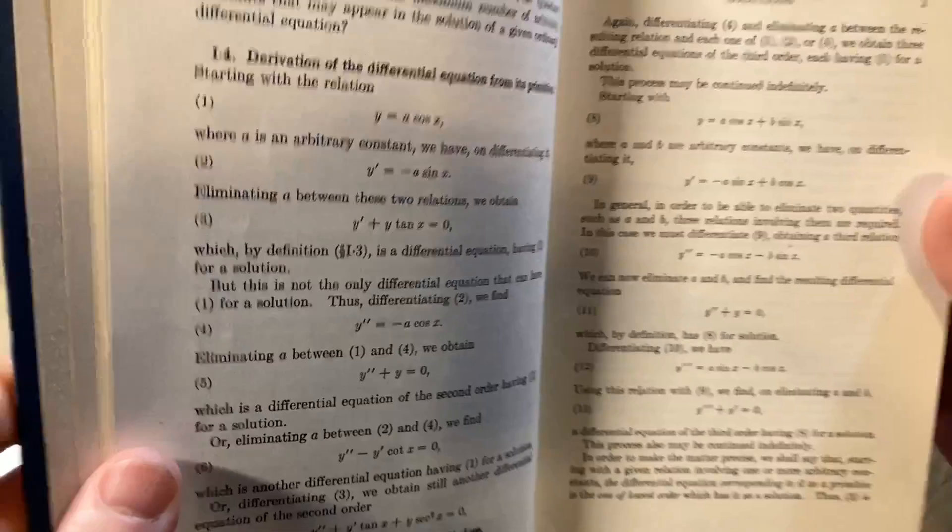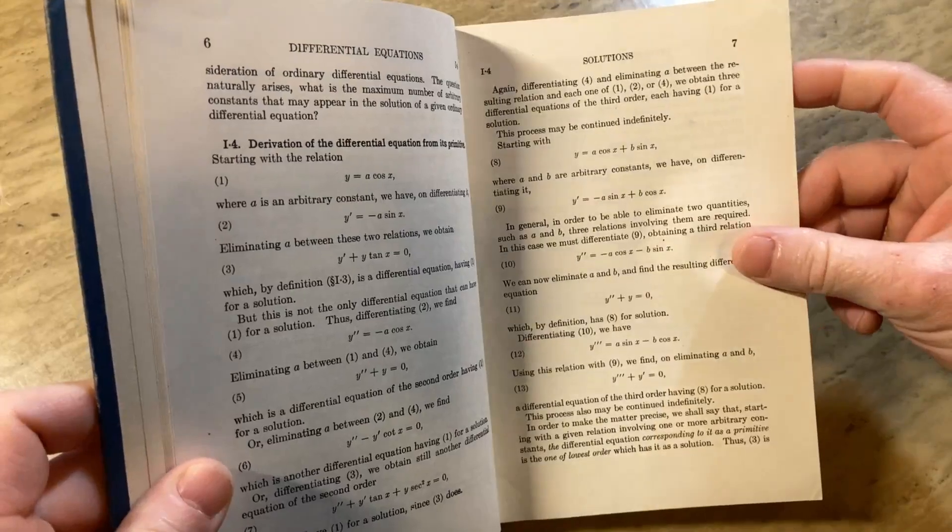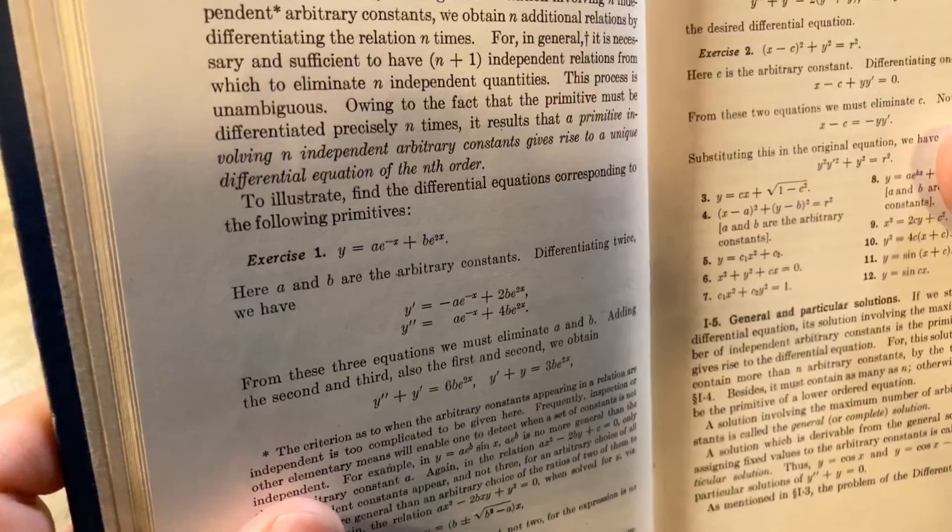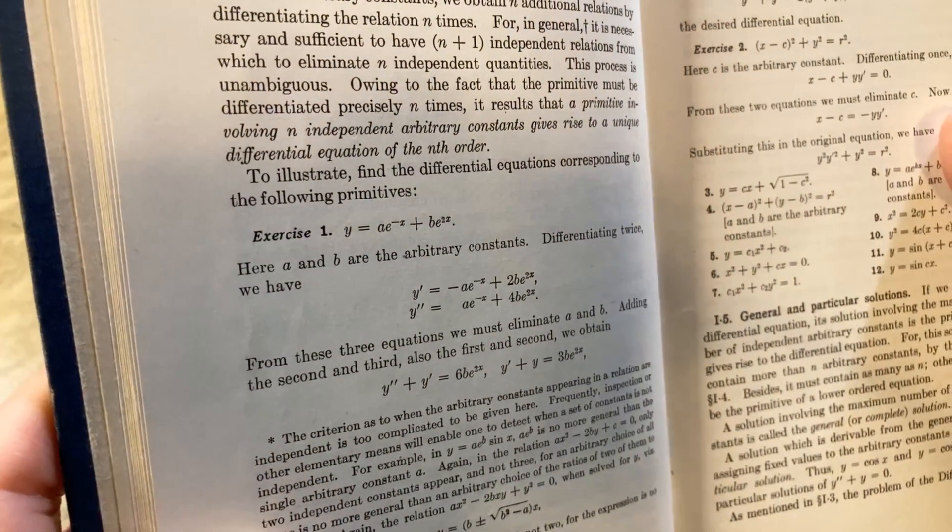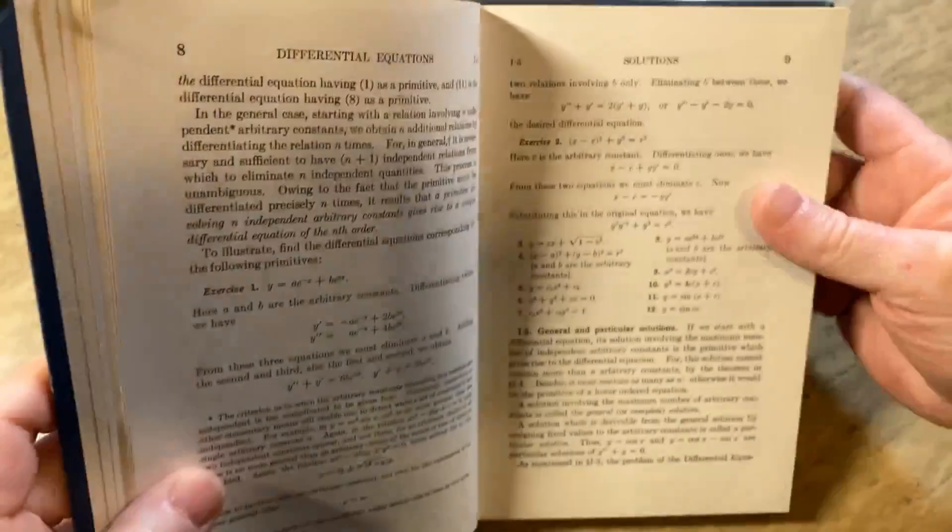Derivation of the differential equation from its primitive. Here's another one here. A and B are arbitrary constants. Differentiating twice, so they come up with a differential equation.